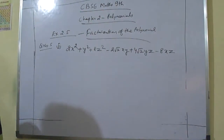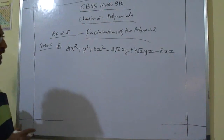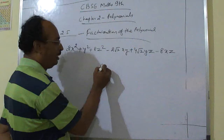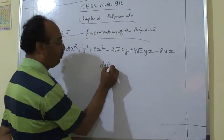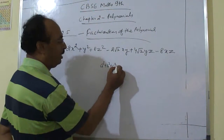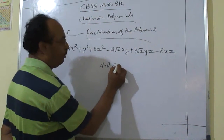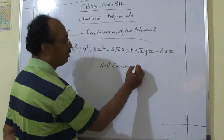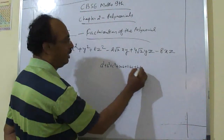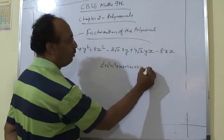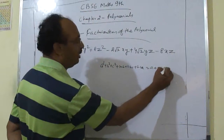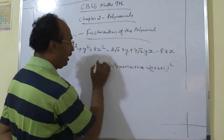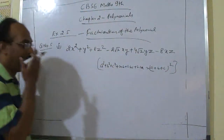We will be converting it using the same formula: a² + b² + c² + 2ab + 2bc + 2ca = (a + b + c)².